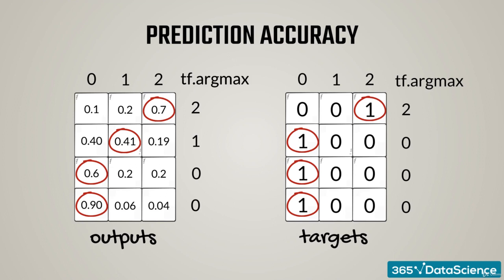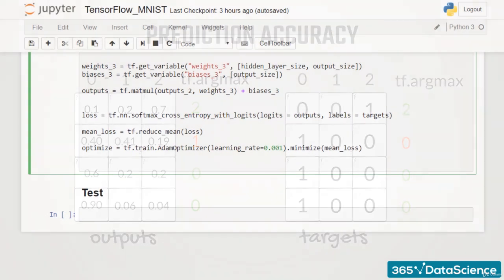If the indices are matching, the model has predicted accurately. Otherwise, it hasn't. It's truly a true-false situation. You are correct, or you aren't.